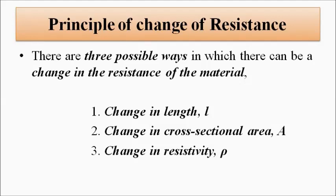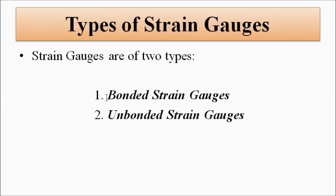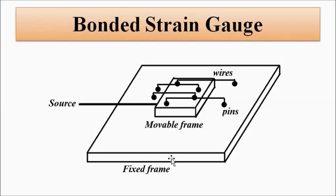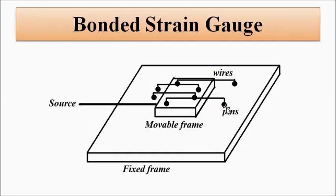The basic setup of a strain gauge used in biomedical pressure transducers falls into two categories: bonded strain gauges and unbonded strain gauges. The bonded strain gauge consists of a two-frame setup. The frames can be made of any material like paper, hard paper, cardboard, or bakelite. One frame is fixed and stationary; the other is movable. The movable frame is connected to the diaphragm. The two frames are connected to each other through four wires, which are fixed on the fixed frame with the help of pins.